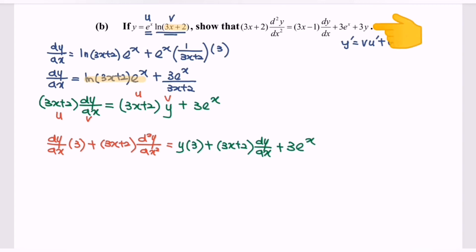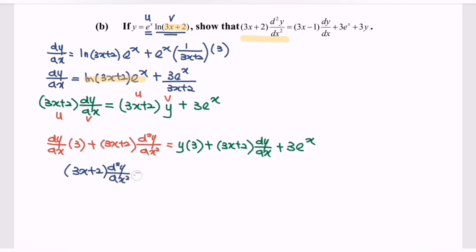Refer back to the question — it asks us to show a particular result. Rewriting the situation, we have (3x plus 2) times the second derivative equals (3x plus 2) times dy/dx, minus 3 times dy/dx, plus 3 times eˣ.